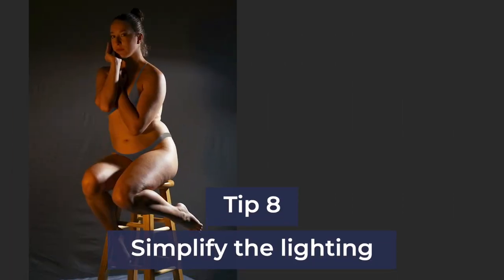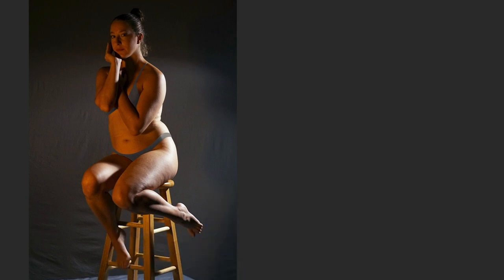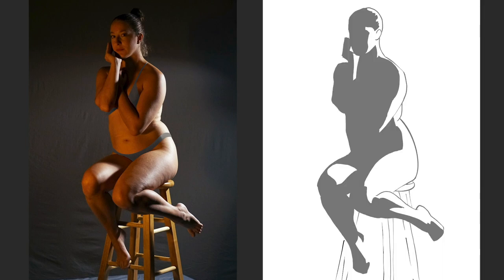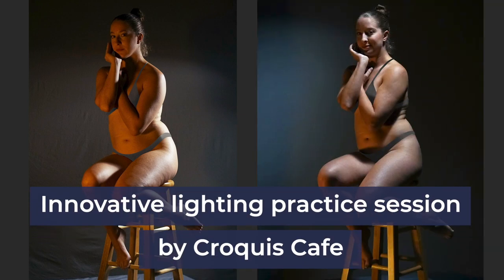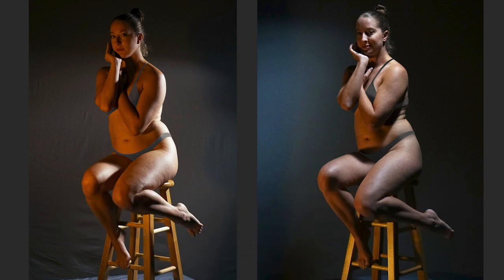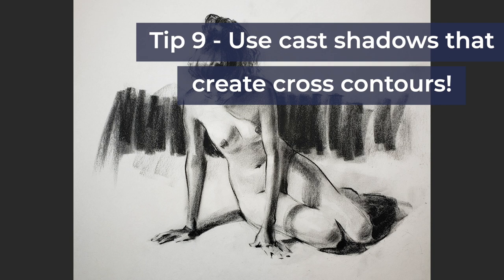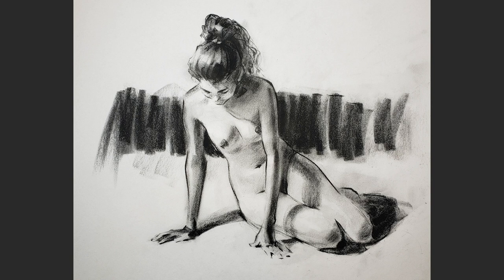Sometimes you get more complicated lighting setups with two or more light sources. In a quicker drawing, it's hard to clarify both and make the lighting make sense, so just pick one main light source, create shadow shapes based on that, and ignore the other. This Figuary session has a variety of lighting setups for the same pose, so you'll be able to practice seeing how lighting changes the shadows. When you see a cast shadow that nicely wraps around a form, really use it to explain the form — it's a great excuse to put in cross-contour lines.